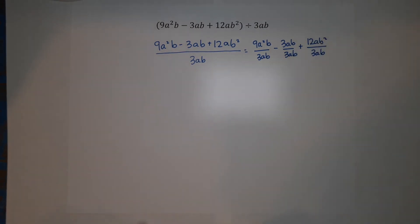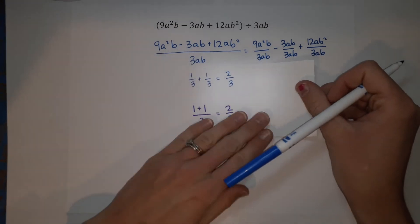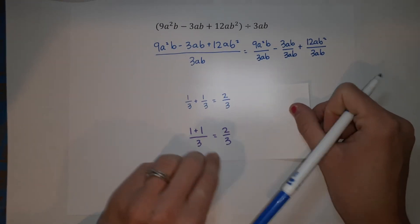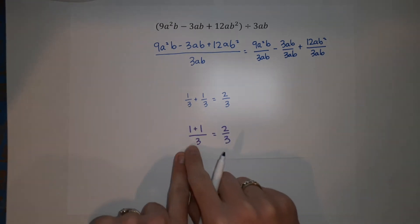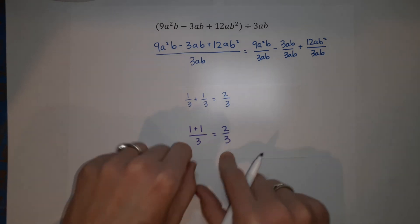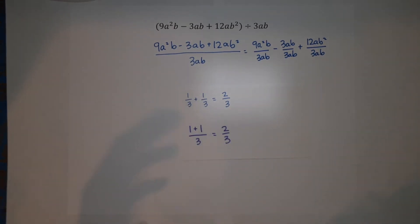If you're like, that's witchcraft, you can't do that. Look, here's my lovely thing showing you why this is okay. 1 third plus 1 third equals 2 thirds, right? Well, 1 plus 1 over 3 also equals 2 thirds. So we're just separating it out, but it's still the same thing.